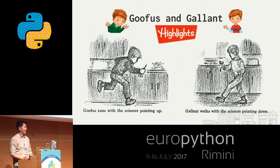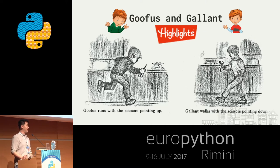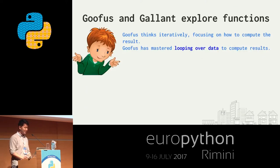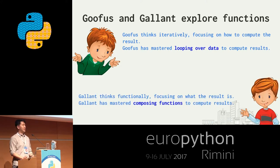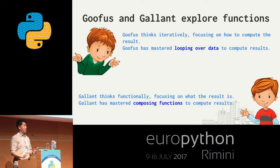Let's get into examples using Goofus and Gallant — the good kid and bad kid from my childhood. Goofus runs with scissors pointed up; Gallant walks carefully with them pointed down. Goofus thinks iteratively: he focuses on how to compute the result, thinks about the computations, and loops over data. Gallant thinks functionally about the end result, focuses on what the result is, and composes functions to produce what he's looking for.